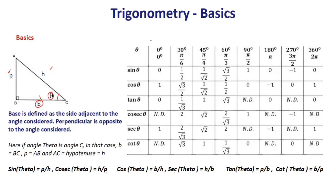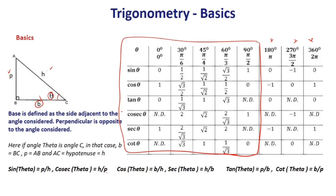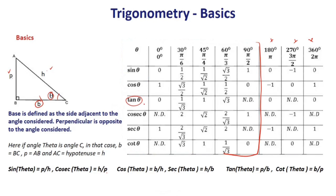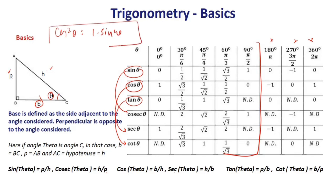From a CAT standpoint, the trigonometry table up to 90° is something you must remember. If you know sine and cos, you can calculate tan because tan is sine upon cos, and you can calculate the rest: cosec is reciprocal of sine, sec is reciprocal of cos, cot is reciprocal of tan. So as long as you know sine and cos, you are good to go.